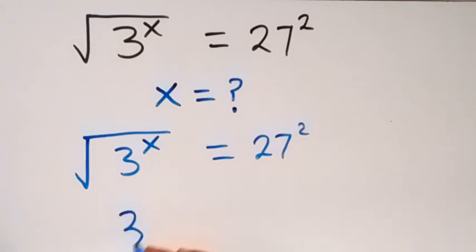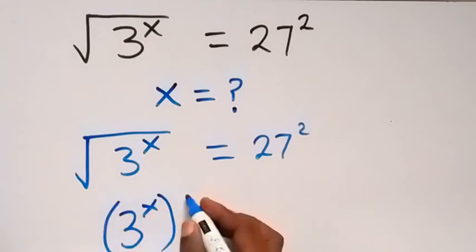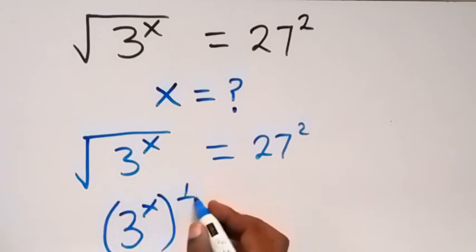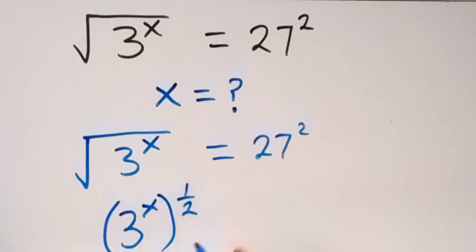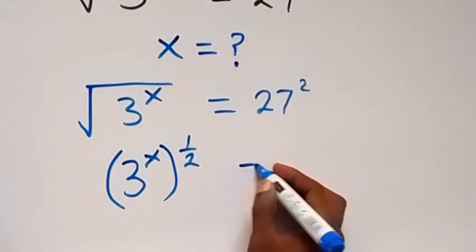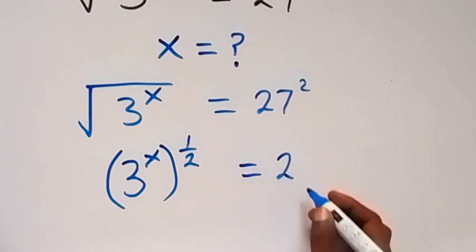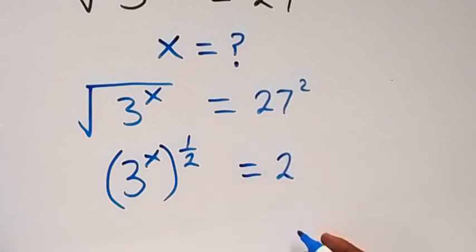From here we can rewrite this, and this will be 3 raised to power x, then raised to power half — that's another way of writing the square root, from the law of indices. And this is equal to 27 raised to power 2.